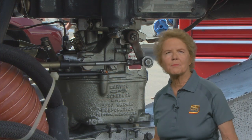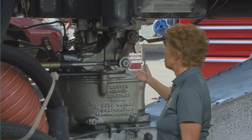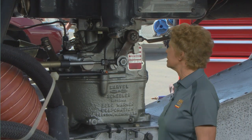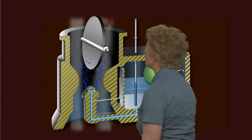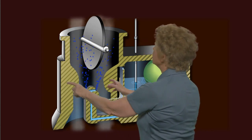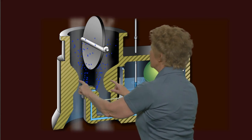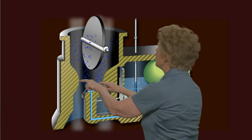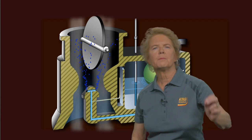Let's talk about the operating principle of float-type carburetors. Float-type carburetors operate on the principle that you have a lot of air coming in through the carburetor intake, but it's got to go through this venturi — this narrow passageway in the carburetor. As the air goes through that narrow passageway, it speeds up, and as the air speeds up, the pressure of the air drops.